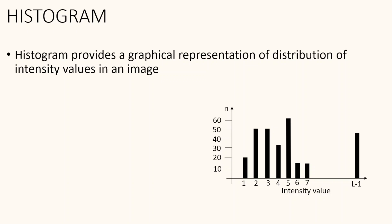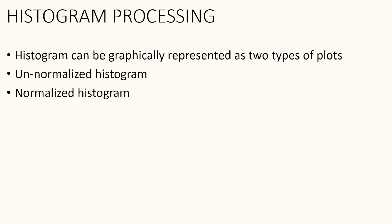From this histogram we can see that for a particular intensity of 5, the number of pixels is 60. Similarly, for an intensity of 2, the number of pixels is 50 in the image. There are two different representations of histogram: one is an unnormalized histogram and the second is a normalized histogram. We will look into the difference between these two.